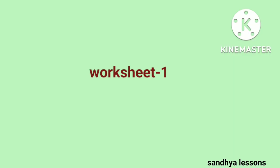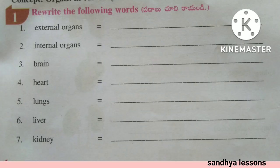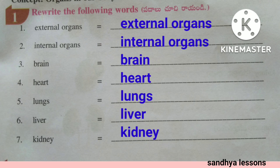Worksheet 1. First, rewrite the following words. The given words are: external organs, internal organs, brain, heart, lungs, liver, kidney.